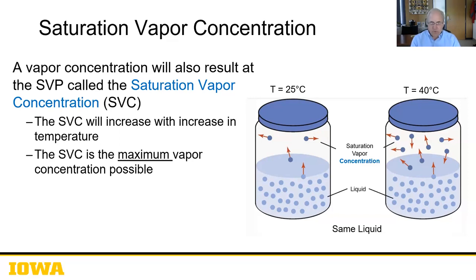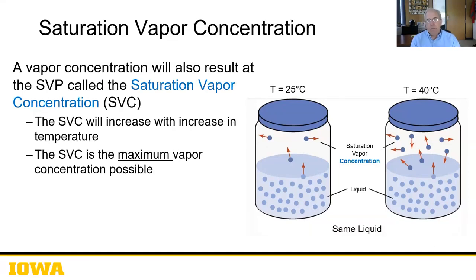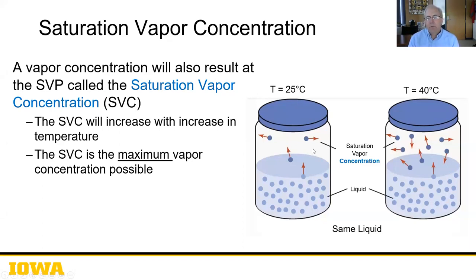The saturation vapor pressure I mentioned earlier — the 10⁻⁵ value — that is the saturation vapor pressure; it's the most it can possibly be. Out in the atmosphere it will keep evaporating. At two different temperatures, a lower temperature gives a lower saturation vapor concentration, and a higher temperature gives a higher concentration. We have to consider this when measuring — the difference between a cold morning spray and a hot afternoon spray matters significantly.